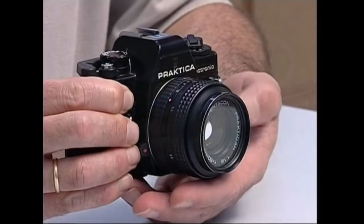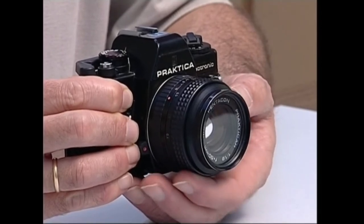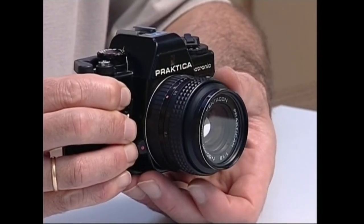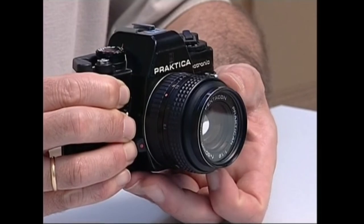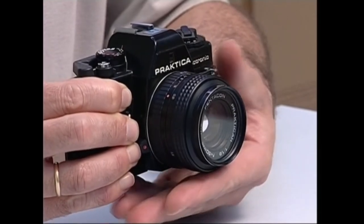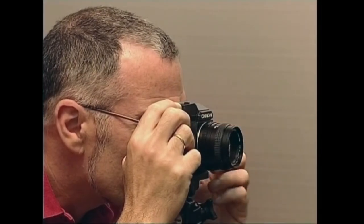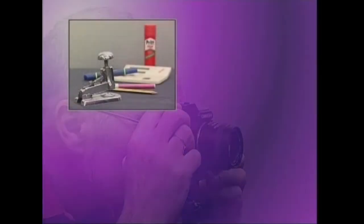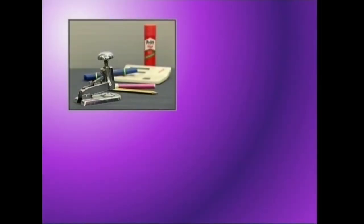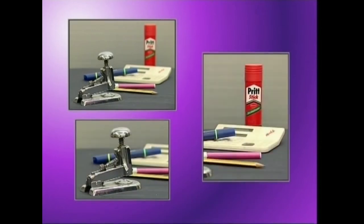Fokatzeko ustaia egiten dugunean, lenteak aurrera eta atzera egiten ditugu, interesatzen zaiguna fokatu arte. Argazki kameraren fokatzeko ustaia azbaliatuz, toki beretik eta kuadroa aldatu gabe, argazki arras ezberdinak lor ditzakegu.